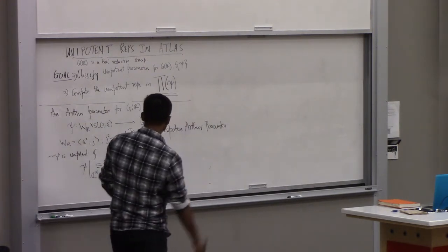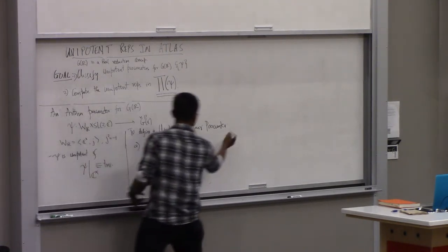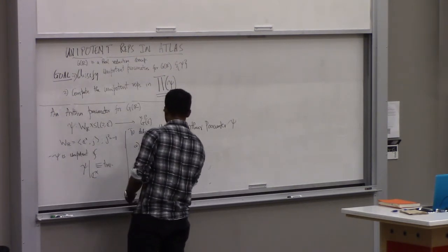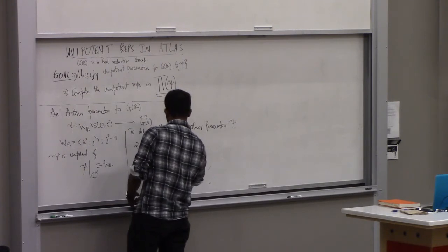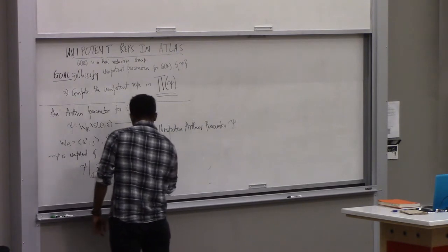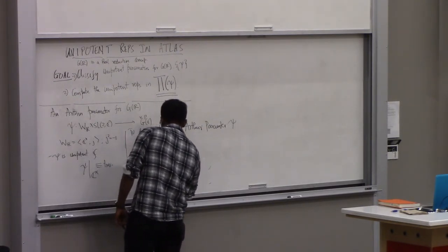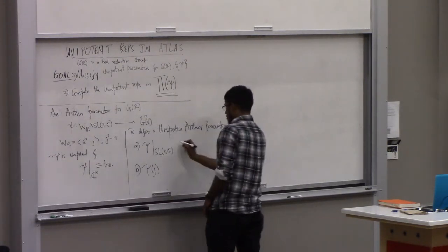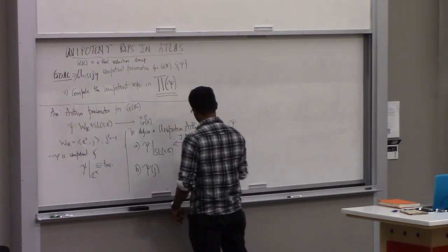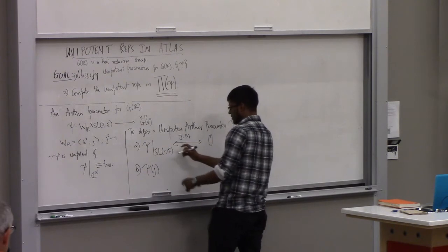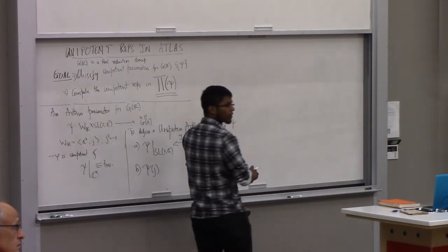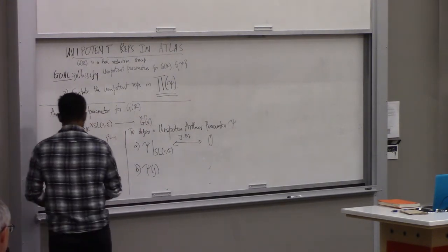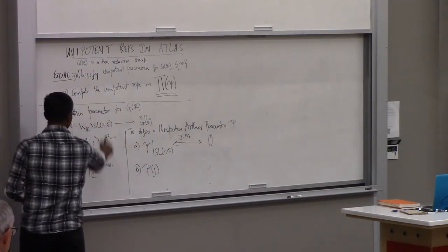So immediately from this, we can notice the following: to define a unipotent author parameter, there are two things I need to do. The first part is to specify what happens when psi is restricted to the SL(2,C) part. And then, the second part is to specify what happens at psi(j), because psi restricted to C cross is trivial.